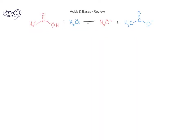In this acid-base equilibrium equation, we see that one compound, the acetic acid, donates a hydrogen ion to the water, which acts as a base. The two products we get are hydronium ion, which is a conjugate acid of water, and the acetate ion, which is a conjugate base of acetic acid.